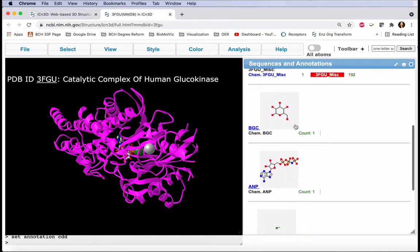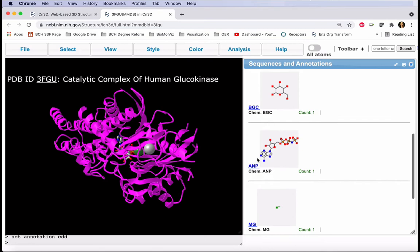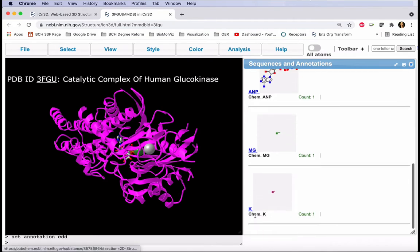Our ligands appear at the bottom. We can see BCG, ANP, MG, and K.